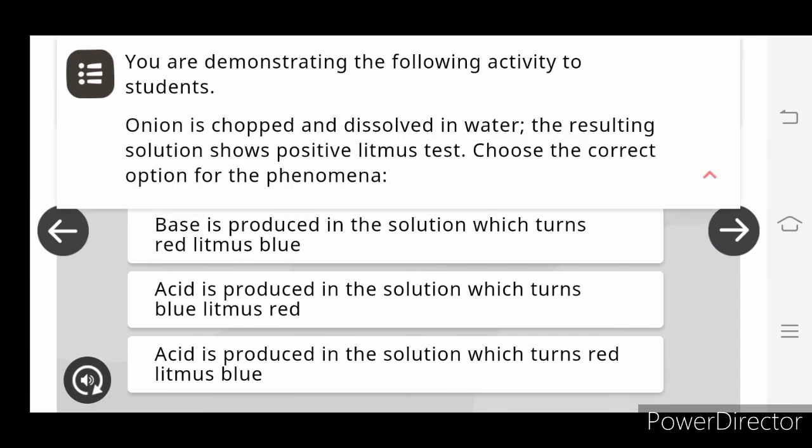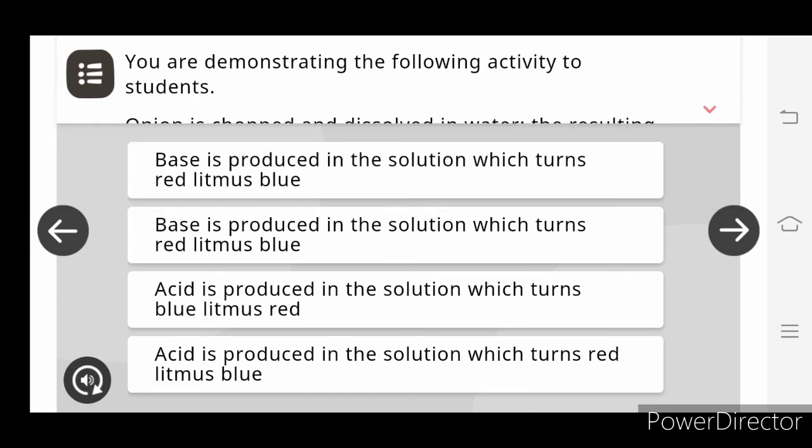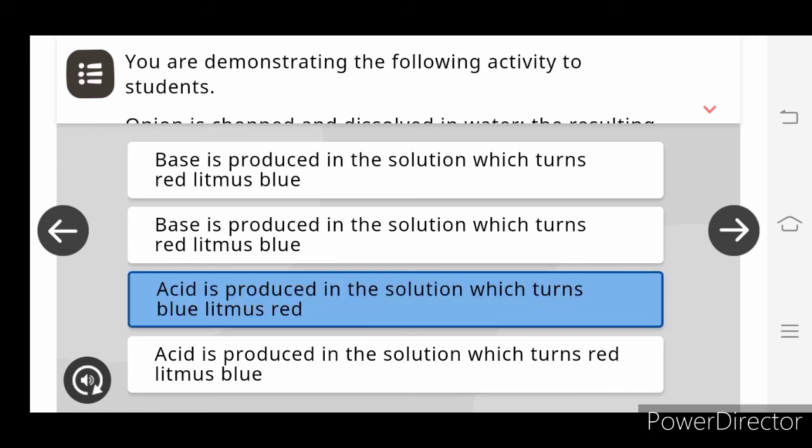The next question we have here: you are demonstrating the following activity to the students. Onion is chopped and dissolved in water. The resulting solution shows positive litmus test. Choose the correct option for the phenomena. So here acid is produced in the solution which turns blue litmus red. This is correct.